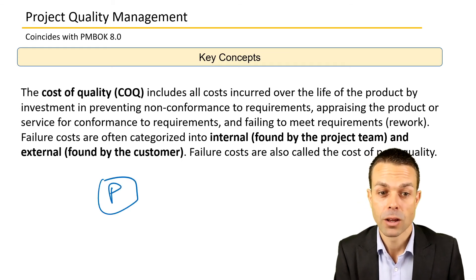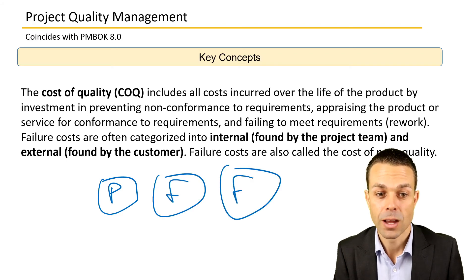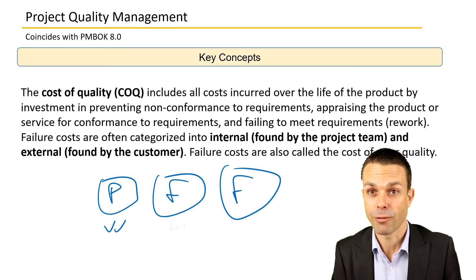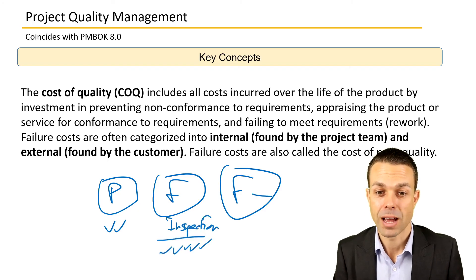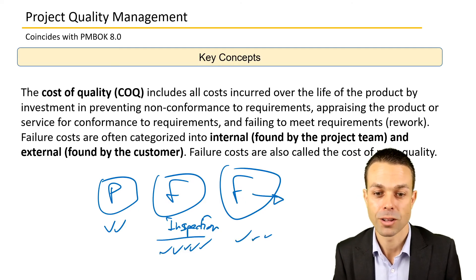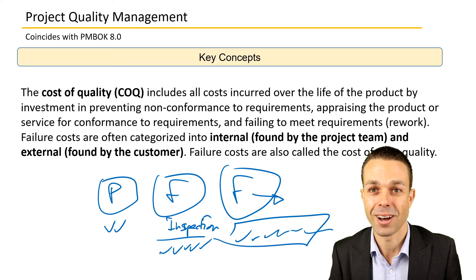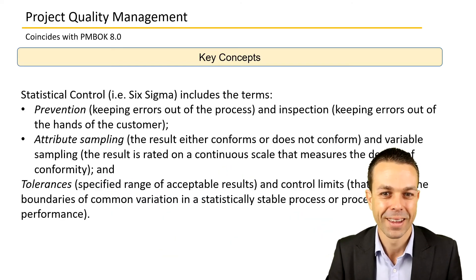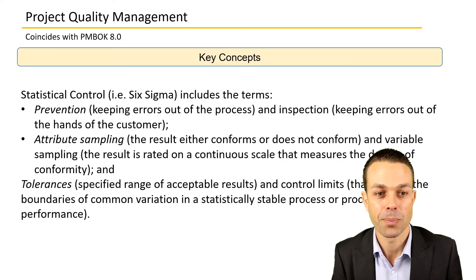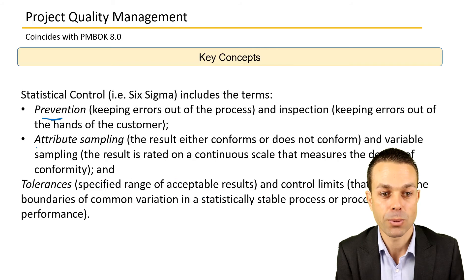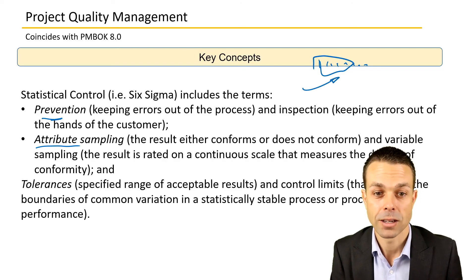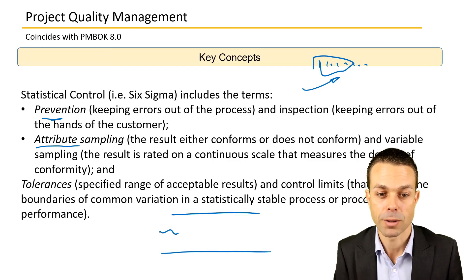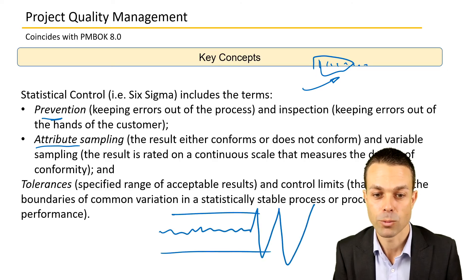Preventing errors is often the least costly approach. Finding them through inspection is a bit higher cost. But having to fix them once they've been found by a customer — that's usually the highest cost, including brand damage. Statistical control, for example six sigma, includes prevention, attribute sampling — where you might sample five out of a hundred items to get a good idea of how things are tracking — and tolerances or control limits, where if something goes out of those control limits, you need to bring it back on track.